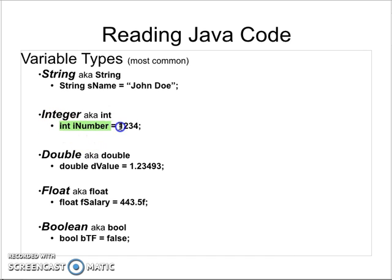An integer can only be a number — it can only be a whole number, an absolute number. It cannot have a decimal. A number is a number, and an integer has to be a whole number. It is not contained inside of quotes. If you put double quotes around it, it becomes a string, because a string can be alphanumeric.